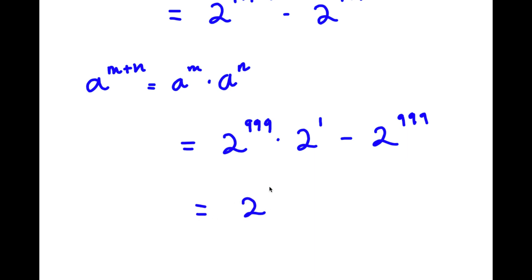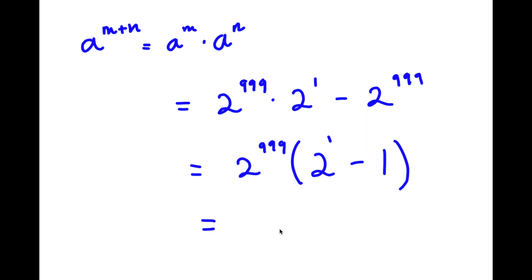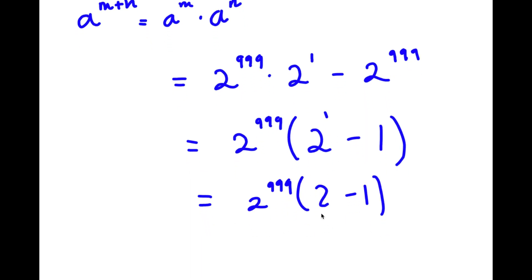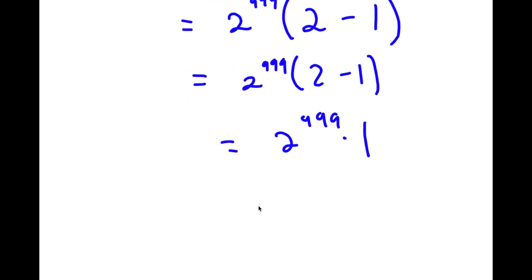This is the same thing as 2 to the power of 999 times — 2 to the power of 999 times 2 to the power of 1 divided by 2 to the power of 999 is simply 2 to the power of 1. And 2 to the power of 999 divided by 2 to the power of 999 is 1. So I have 2 to the power of 1, which is 2, minus 1, which equals 1. So I have 2 to the power of 999 times 1, which is simply 2 to the power of 999.